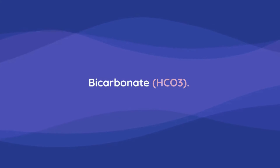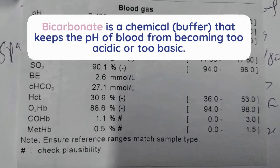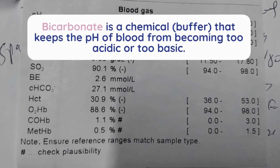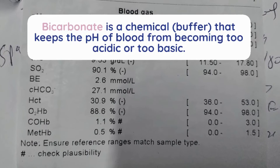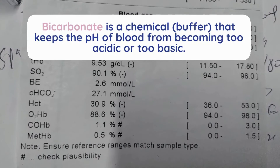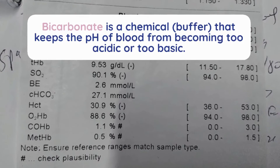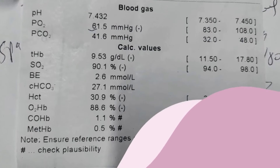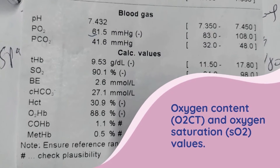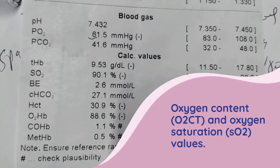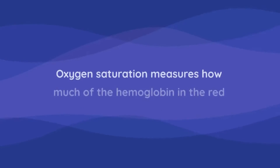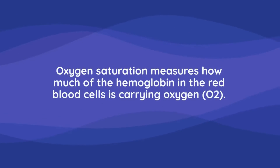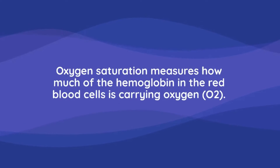Bicarbonate, HCO3. Bicarbonate is a chemical buffer that keeps the pH of blood from becoming too acidic or too basic. Next, oxygen content, O2CT, or oxygen saturation, SpO2. O2 content measures the amount of oxygen in the blood.